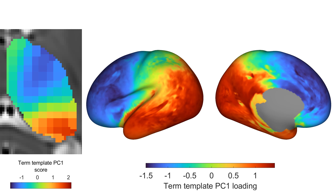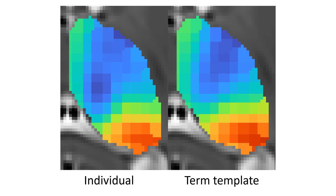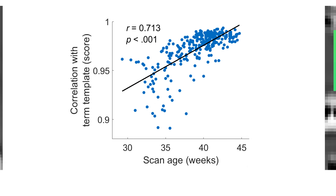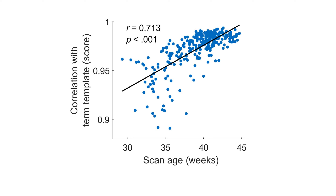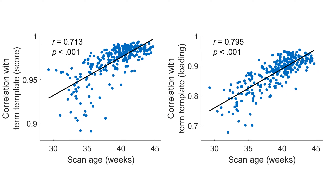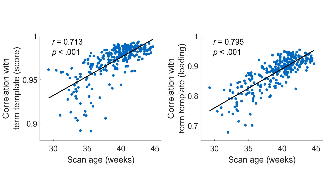This is a term template and we want to assess how much individuals deviate from it. To do so, we can correlate each individual's similarity to the term template against their age at scan. We can see a strong positive correlation, meaning that across the third trimester the gradient is becoming gradually refined — and I really want to stress the gradual. The weakest correlation in the scores is about 0.9, meaning the thalamic gradient is largely in place. If we consider just the cortical gradient similarity, there is more variation, but this also shows gradual refinement, meaning this gradient is largely in place by the start of the third trimester.